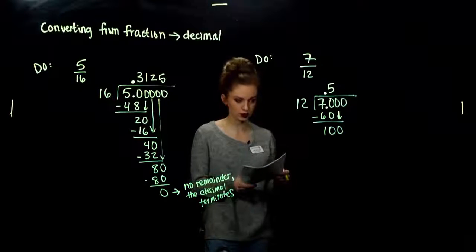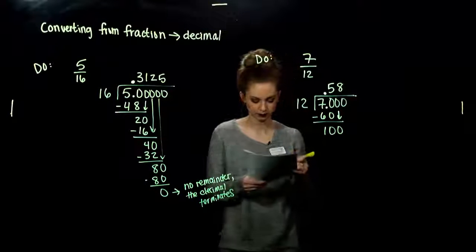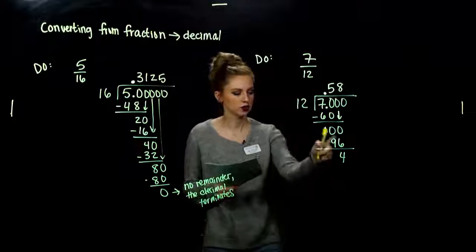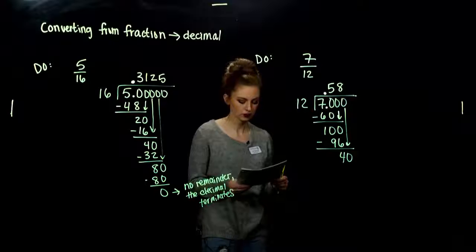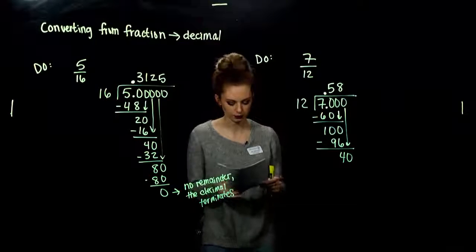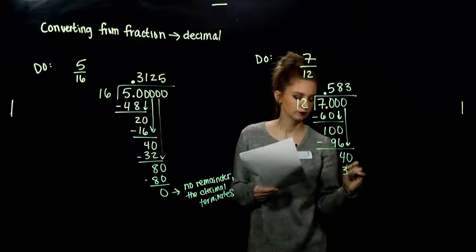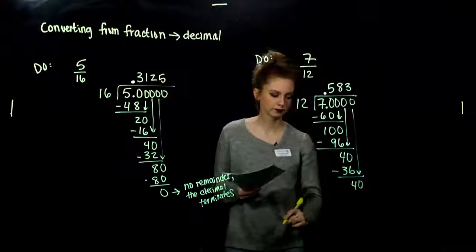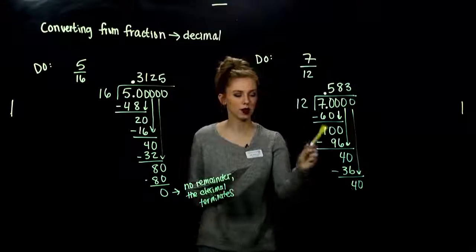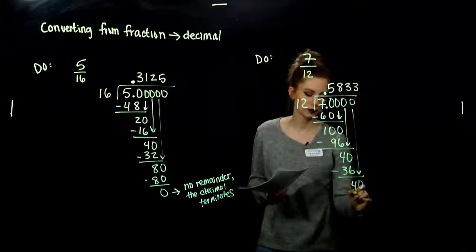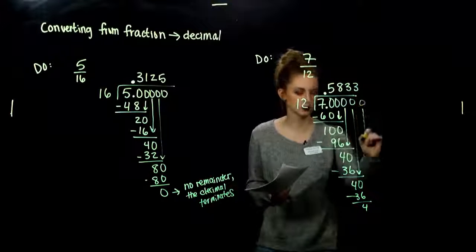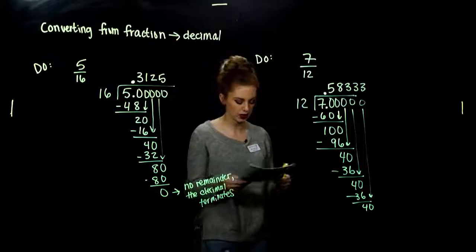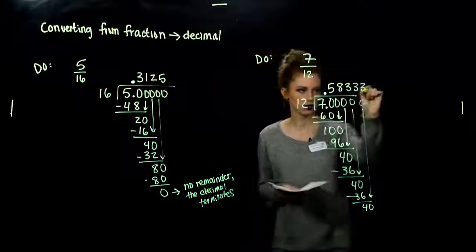How many times can 12 go into 100 without going over? 8. 12 times 8 gives me 96, and that difference is 4. 12 doesn't go into 4, so I need another placeholder. 12 into 40 is 3 times — we get 36, difference of 4 again. Bringing down the next placeholder, 12 into 40 again is 3, difference is 4. It keeps going — we keep getting that repeating remainder, so we keep getting 3s. It's just going to continue on and on.